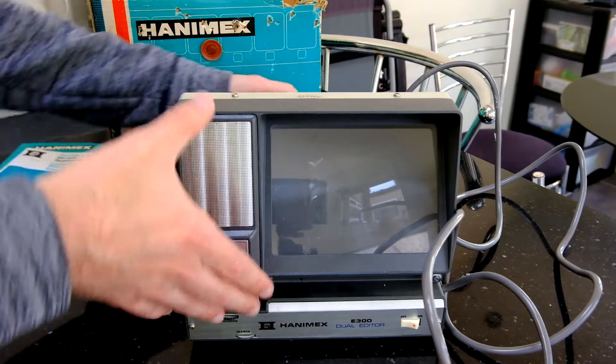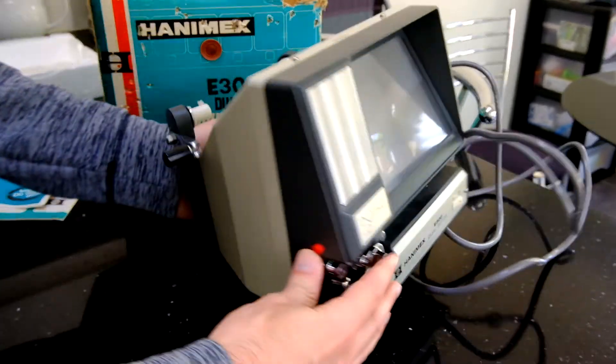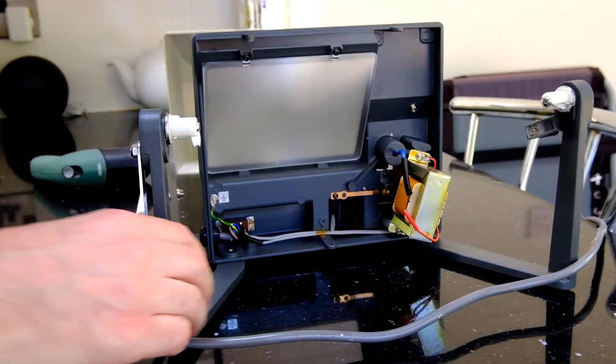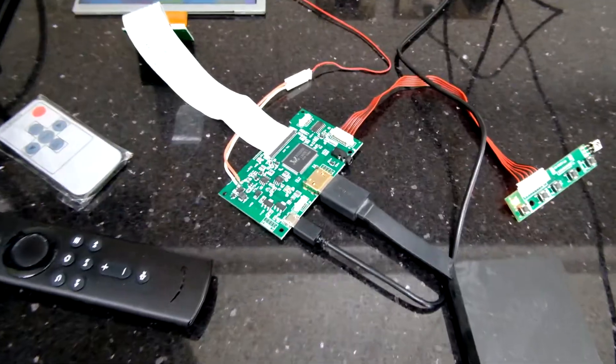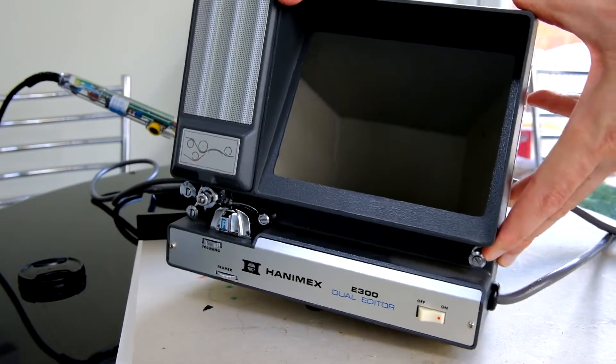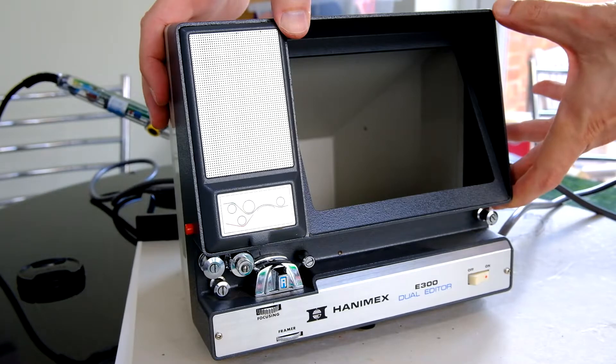In my previous videos to do with the Hanamex E300, I've done a retro unboxing, had a look inside the unit, then the 7-inch screen arrived. And now I'm going to show you how I stripped out all the components from inside the box.